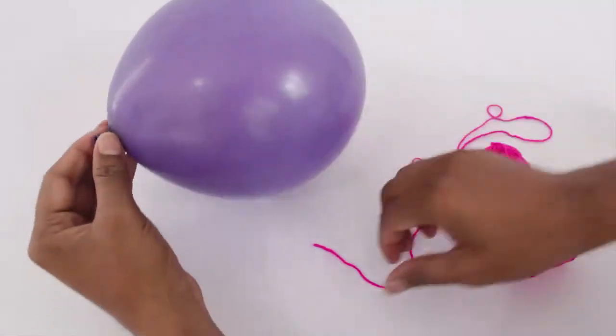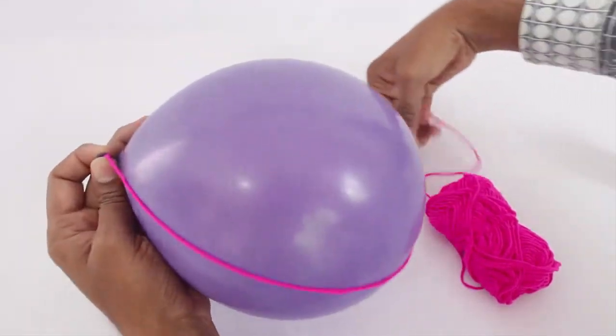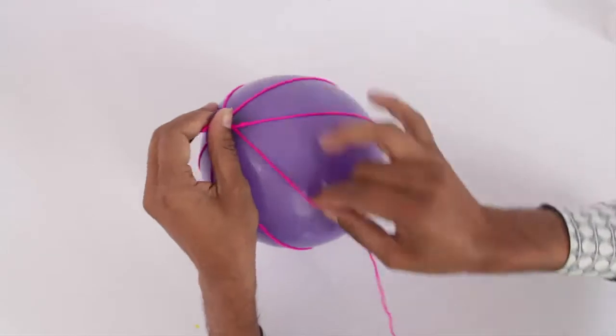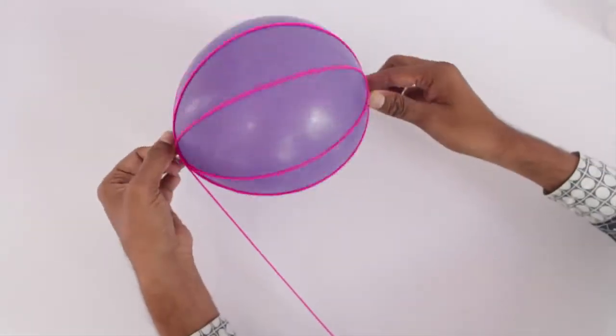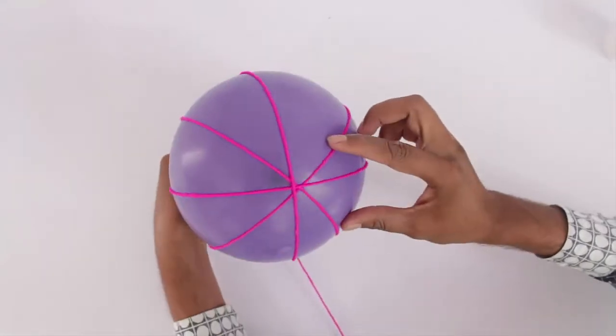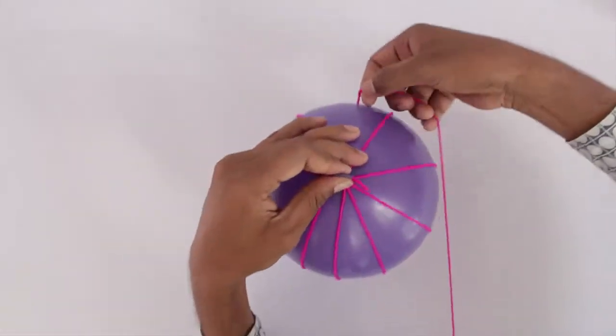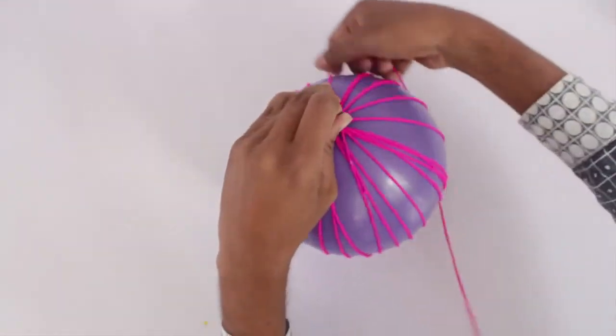It will take you a little while to wrap the thread or the wool as the thread will have to be wound round and round along the entire surface of the balloon. Here you can see that colored wool is being wrapped around.